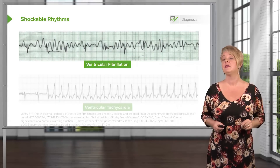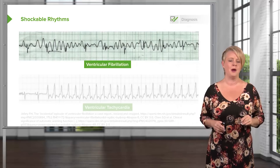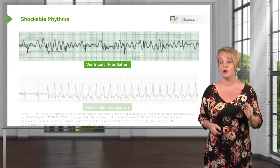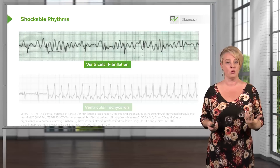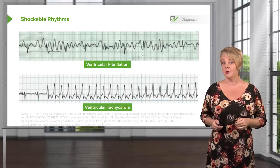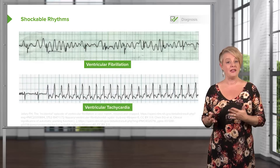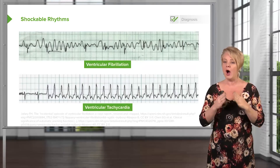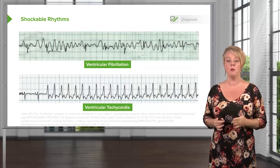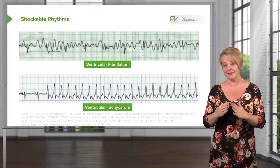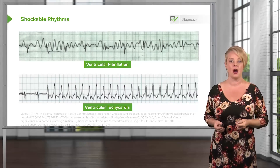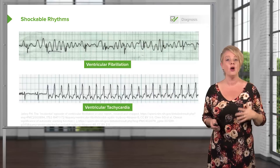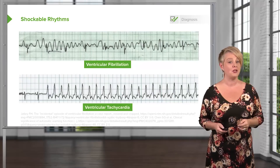The first shockable rhythm is ventricular fibrillation, which is easy to identify — it's randomly fluctuating, goes up and down with no pattern, no rhyme or reason, no QRS complexes, just a disorganized squiggle. The second is ventricular tachycardia, where there is organization to the QRS complexes, but they're wide and bizarre-looking. Anytime you have a fast rhythm with wide QRS complexes, you should suspect ventricular tachycardia. These are the two rhythms that automated defibrillators in public places are looking for when determining whether a patient should be shocked.